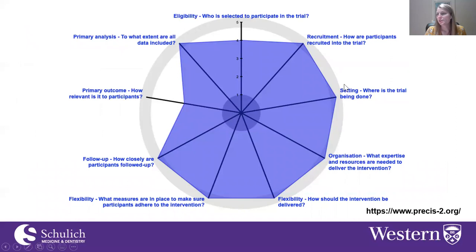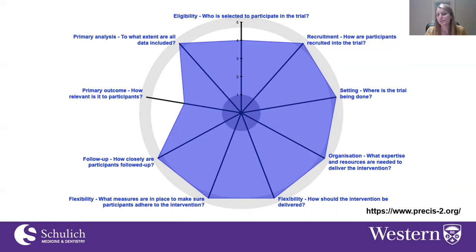This is what the completed PRECIS tool wheel looks like for the OPEN trial. As you can see from the diagram, it's quite clear which domains are less pragmatic: eligibility and the primary outcome. If you're in the design phase of a trial, you may discuss whether it's possible to make changes to these domains to make the trial more pragmatic. If not, as in the case of the OPEN trial, it's important to recognize where you fall short and address these as limitations when presenting your findings. These wheels can be generated at no cost at PRECIS2.org.